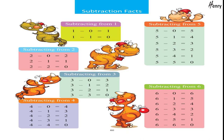Subtracting from four: four minus zero equals four; four minus one equals three; four minus two equals two; four minus three equals one; four minus four equals zero. Subtracting from five: five minus zero equals five; five minus one equals four; five minus two equals three; five minus three equals two; five minus four equals one; five minus five equals zero.